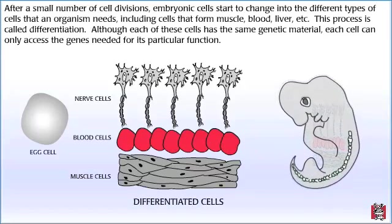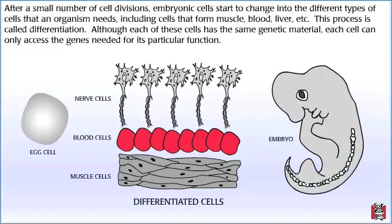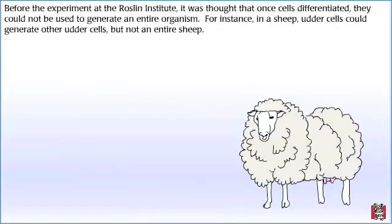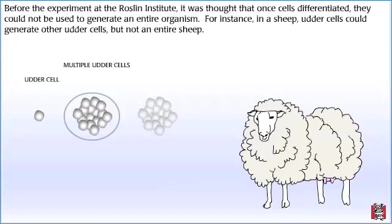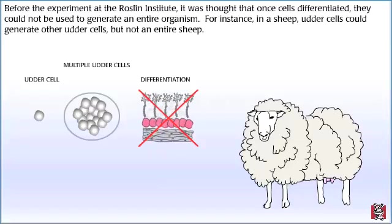Although each of these cells has the same genetic material, each cell can only access the genes needed for its particular function. Before the experiment at the Roslin Institute, it was thought that once cells differentiated, they could not be used to generate an entire organism. For instance, in a sheep, udder cells could generate other udder cells, but not an entire sheep.